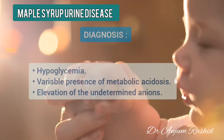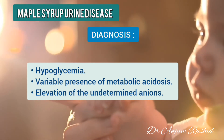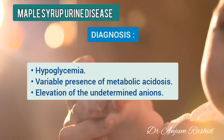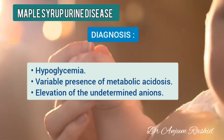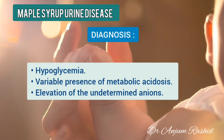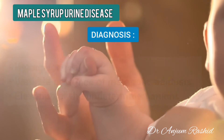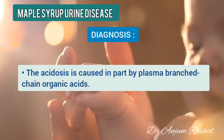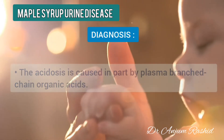Laboratory manifestations of maple syrup urine disease include hypoglycemia, variable presence of metabolic acidosis, and elevation of the undetermined anions. The acidosis is caused in part by the plasma branch chain organic acids.